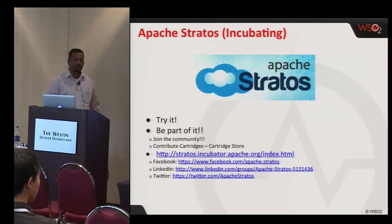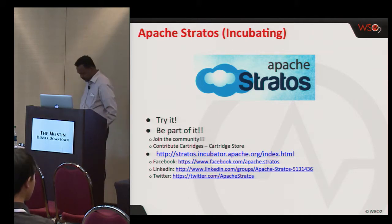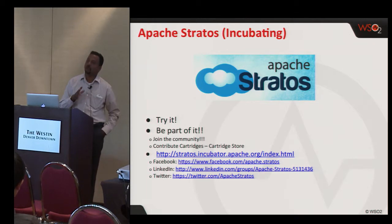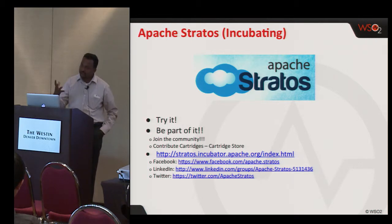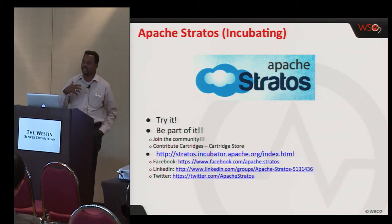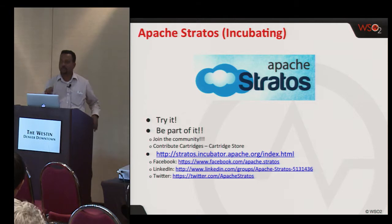Question: Can you give us an example of in-container multi-tenancy? So basically, say you have an application server. The application server is capable of hosting multiple tenants within a single instance. In order to support in-container multi-tenancy, that particular service itself needs to be capable of dealing with tenants. For example, taking a WSO2 example, the WSO2 application server is multi-tenanted by implementation — you can have multiple tenants running inside a single JVM.